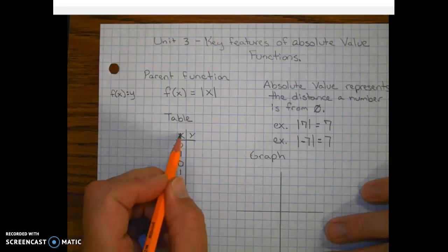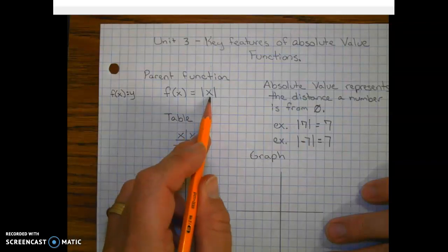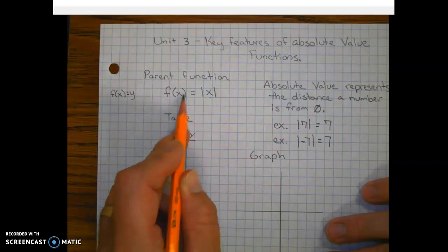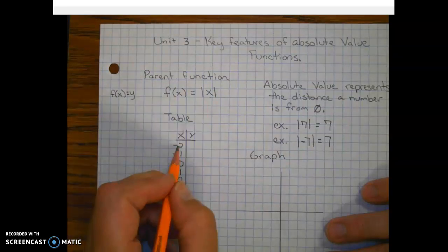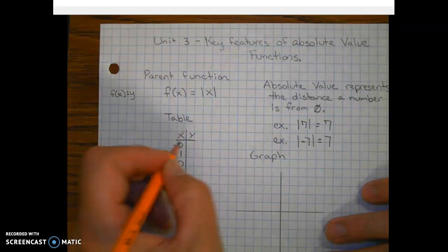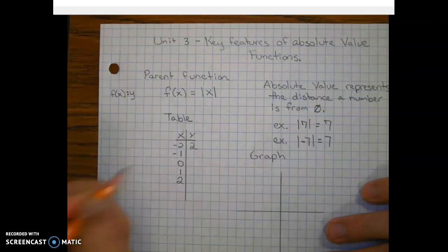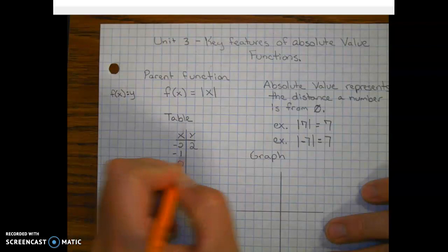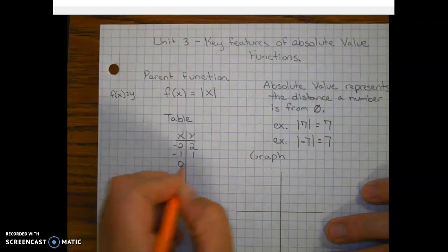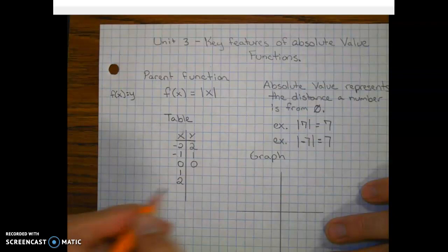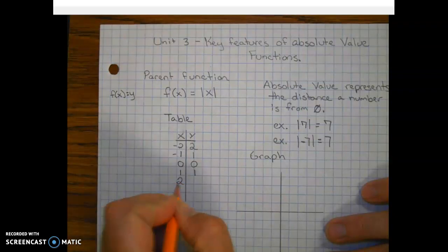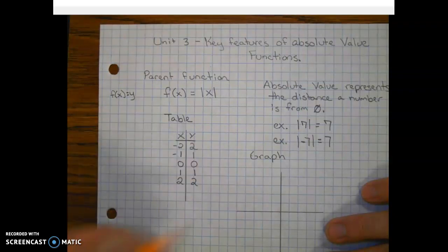And then you plug those into the function. X is known as an input value. So we input these into x and we find out what that answer is. And that represents our output, y. So the absolute value of negative two—inputting negative two in here, negative two is two units from zero. And inputting negative one, zero is zero units from zero, one and two. So this is our parent table.